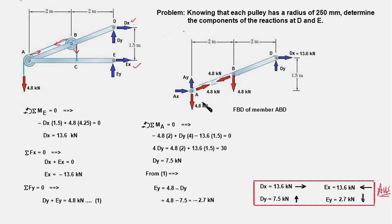Just to add: in this solution we removed the pulleys from the member, but you could have drawn the FBD of the members including the pulleys, as we did in the previous problem, and still obtained the same answer. If you have any questions on these two problems, please write them in the comment section below and I will answer as soon as possible. If you liked the video, please give it a thumbs up, share it with your friends, and if you are new to the channel, please subscribe. Thanks for watching, and see you in the next video.